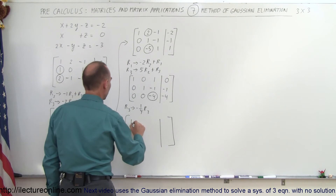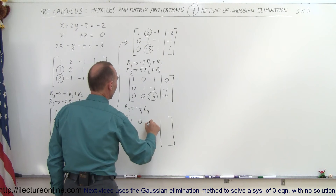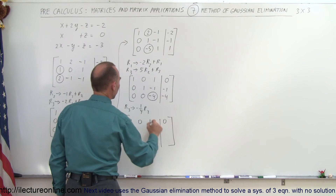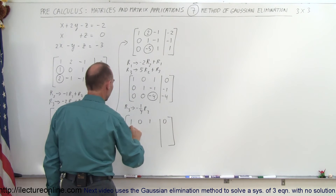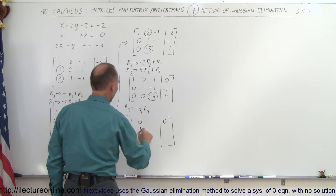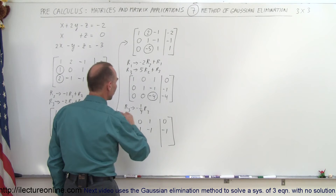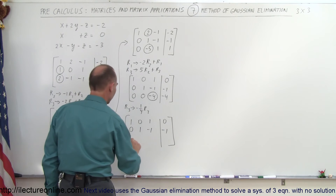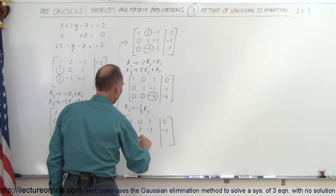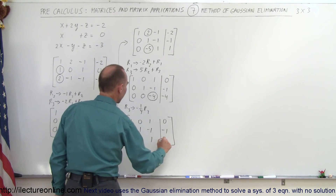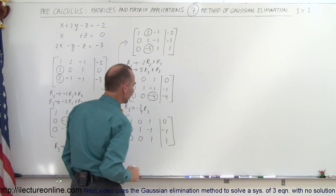When we do that, we get the following matrix. The first row doesn't change: 1, 0, 1, 0. The second row doesn't change: 0, 1, negative 1, negative 1. The third row becomes: 0, 0, 1, and 1.